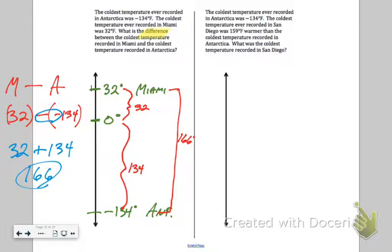The second one's a little different because it tells us in this case, the coldest temperature in Antarctica was negative 134 degrees, and the coldest temperature in San Diego was 159 degrees warmer than the coldest temperature recorded in Antarctica. So it doesn't just stop after that 159. It tells us San Diego was 159 degrees warmer than the coldest temperature recorded in Antarctica. We have to read that whole sentence. A lot of students like to stop and think San Diego was 159. But it says it's 159 warmer than negative 134. So if I'm starting with Antarctica at negative 134, that's Antarctica. I know that San Diego is 159 warmer.